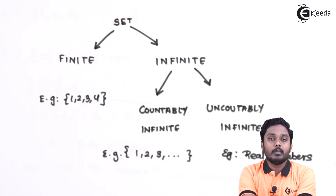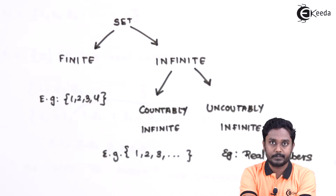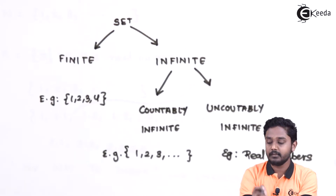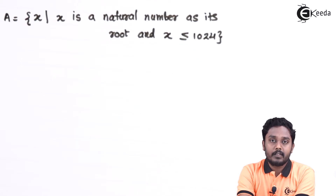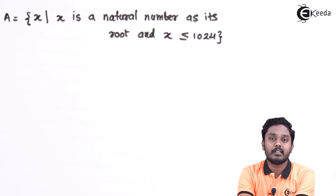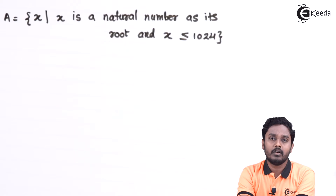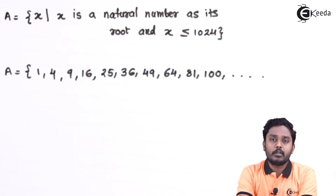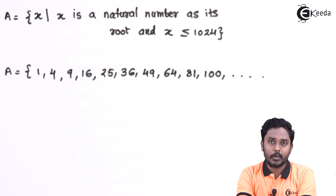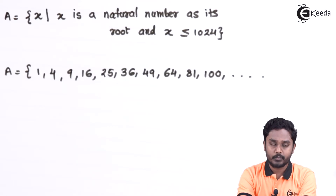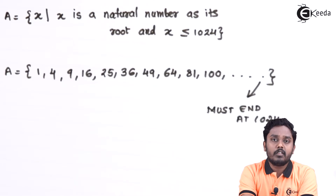Let's see more examples. First, set A is the set of all values of x such that the square root of x is a natural number and x is less than or equal to 1024. This set will end at some number whose square root is less than or equal to 1024, so it is finite. If a set is finite, by default it is countable.